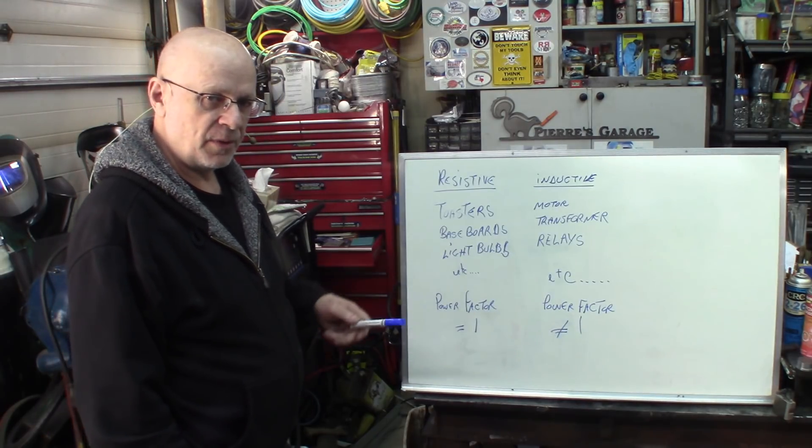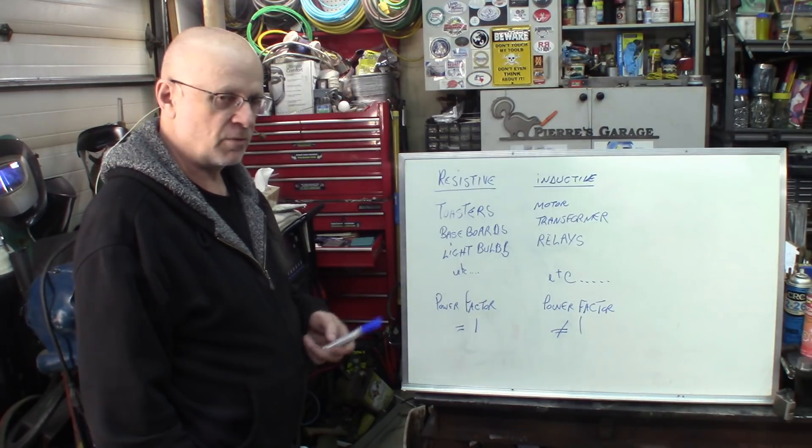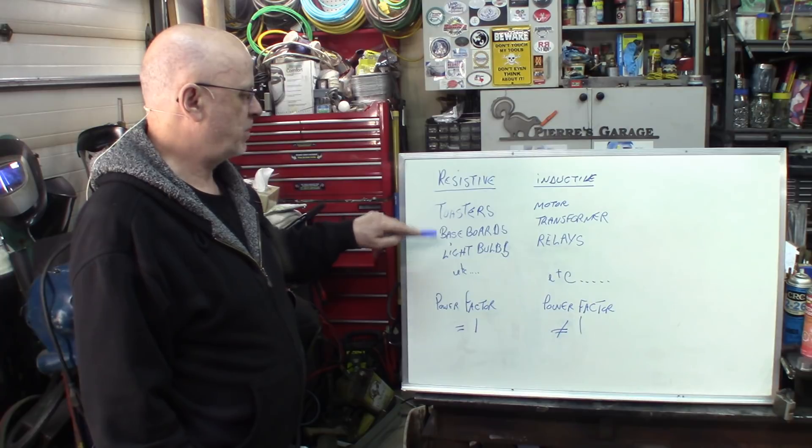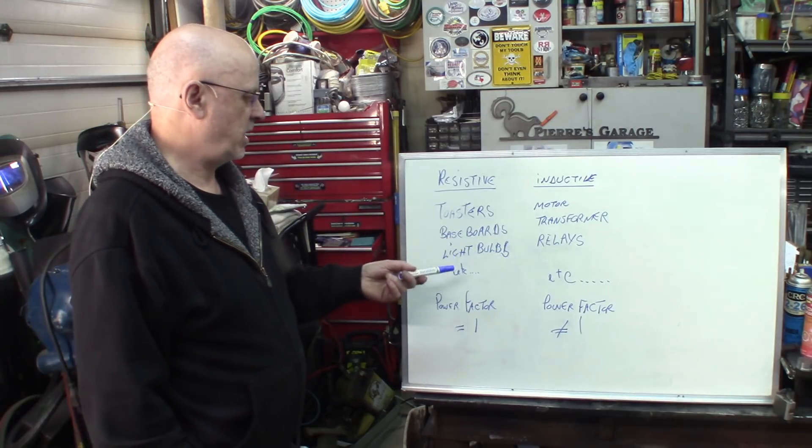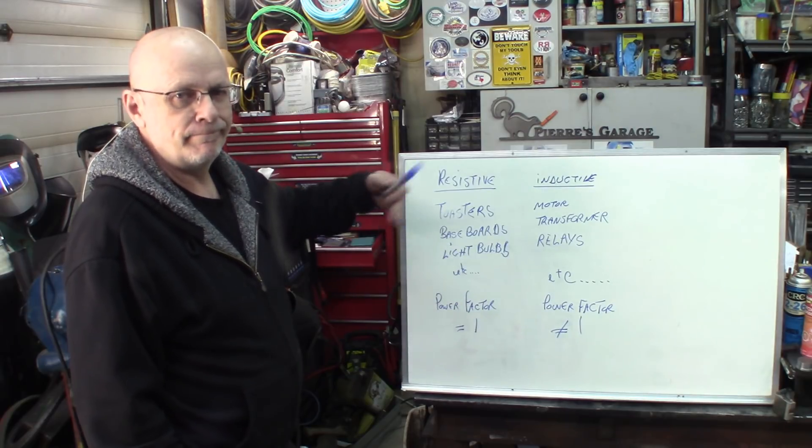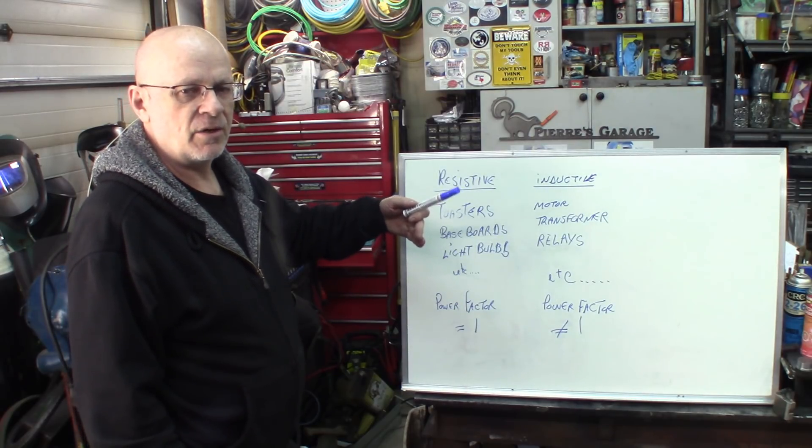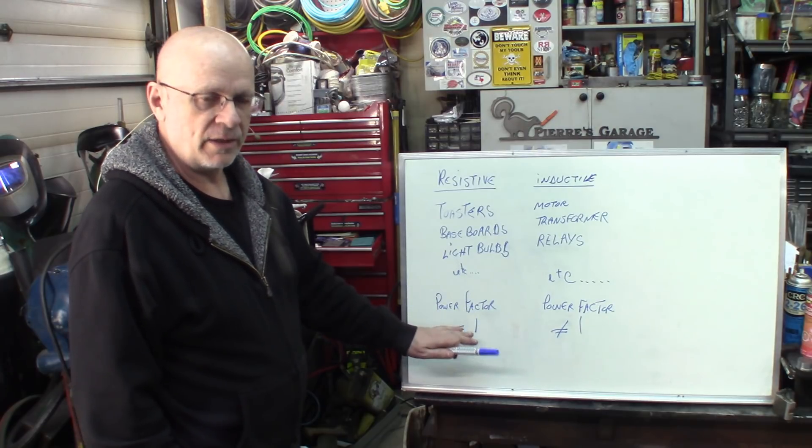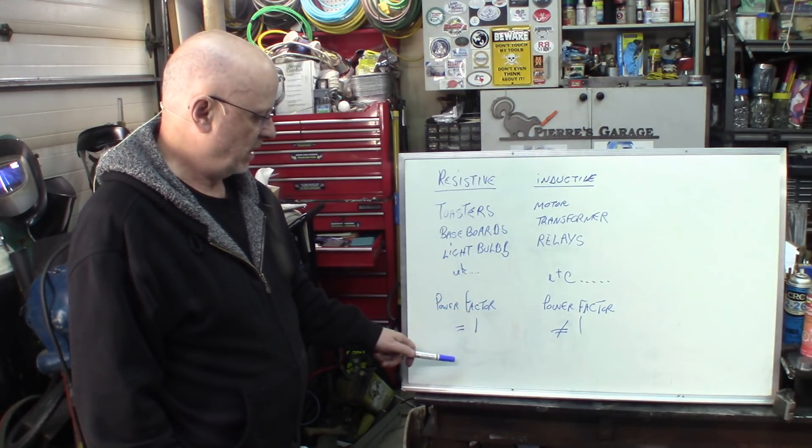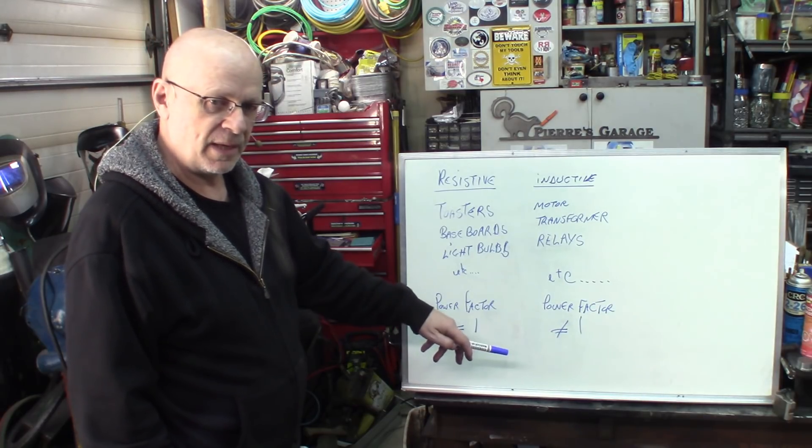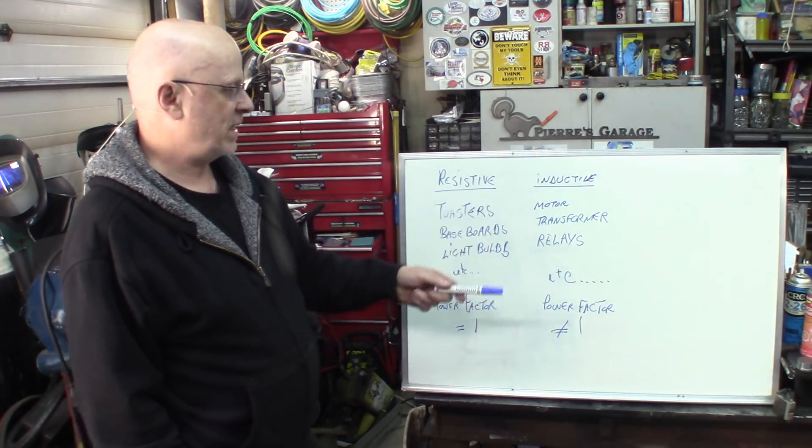To help you make the difference between what's inductive and what's resistive, there are just a few examples. Resistive loads: toasters, baseboards, incandescent light bulbs. They're very near to 100% resistive loads. So the power factor will be considered to be around one or very close to one. So the calculations for power formula with voltage multiplied by amps will be exact in this case.